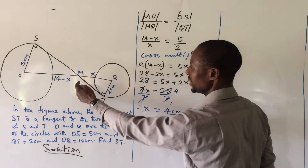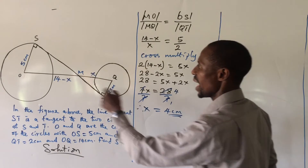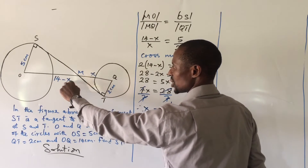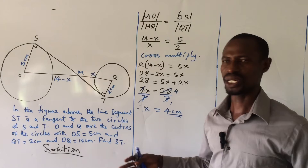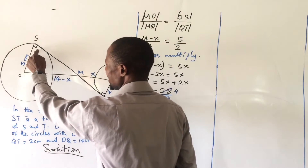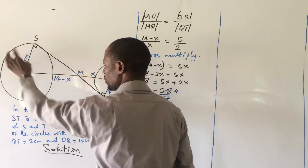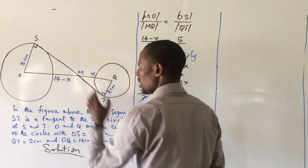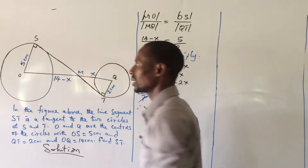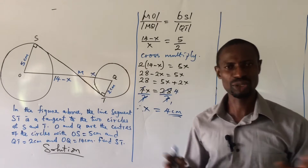So x equals 4 cm. This means MQ = 4 cm and MO = 14 − 4 = 10 cm. Looking at this critically, the angle at M is 90 degrees. If we consider triangle MOX, it is a right angle triangle, and since two sides are known we can apply the Pythagoras theorem.